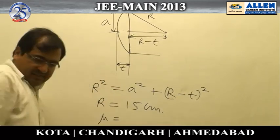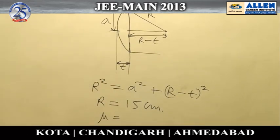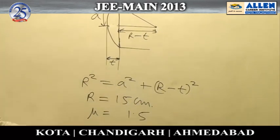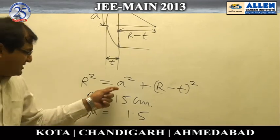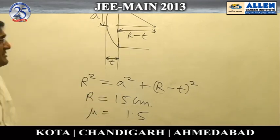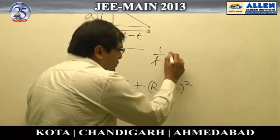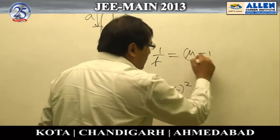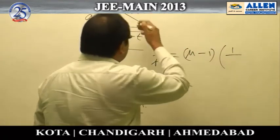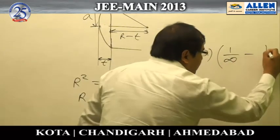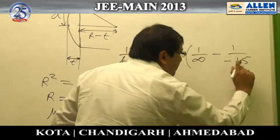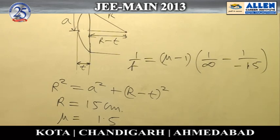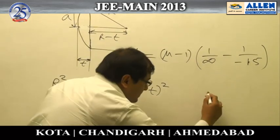The question also gives the speed of light to determine the refractive index, which works out to μ = 1.5. Using the lens maker's formula with this radius and refractive index — f = 1/((μ − 1) × (1/R − 1/∞)) — and solving gives option number three as the answer for the focal length.